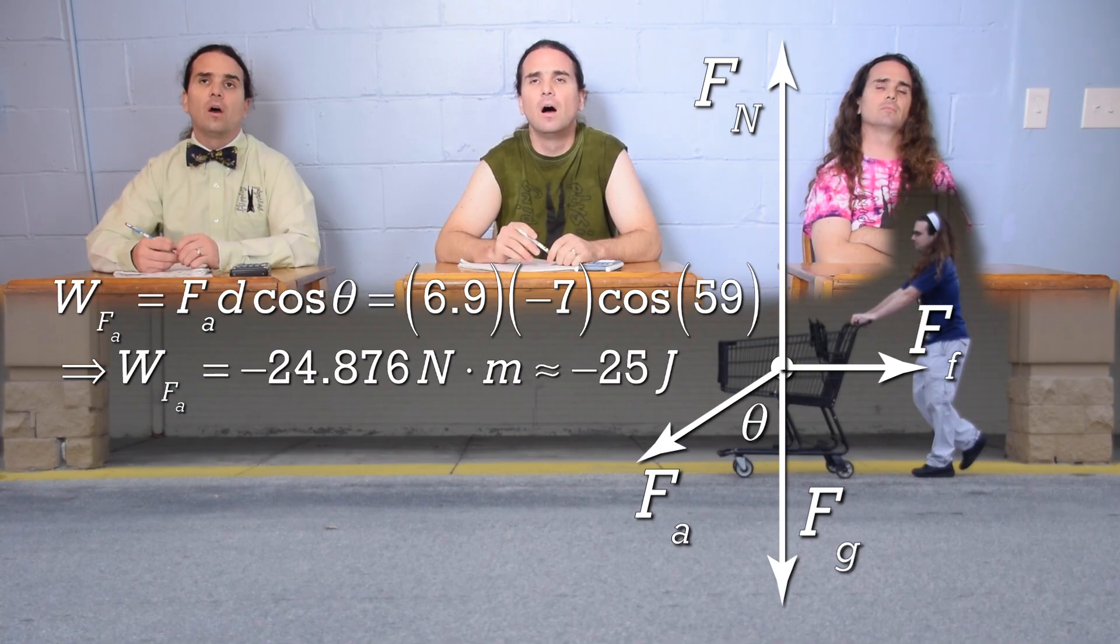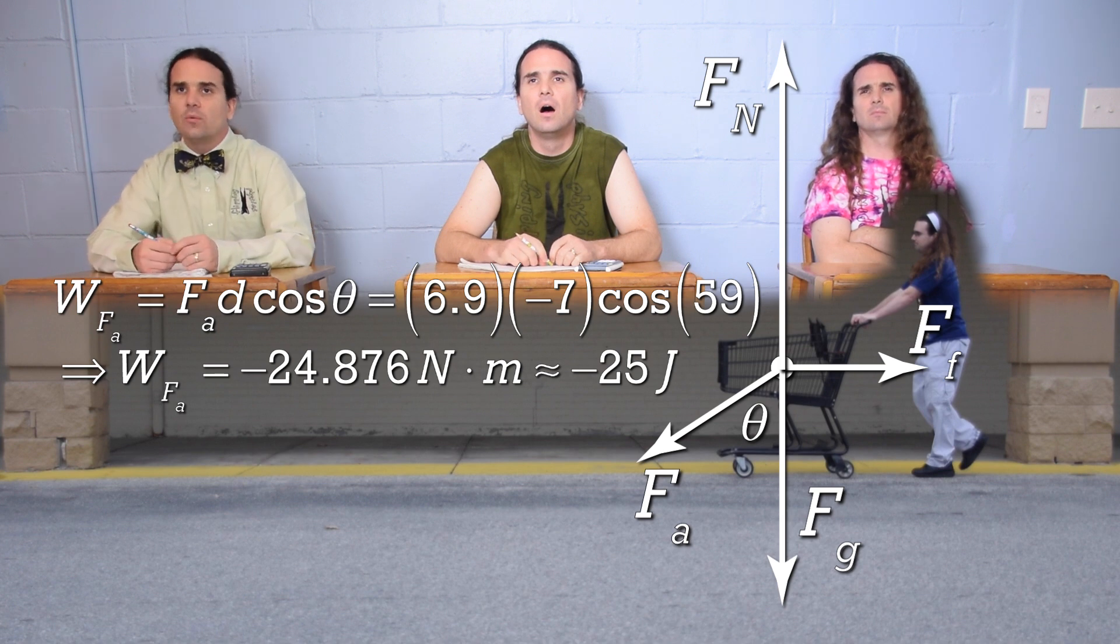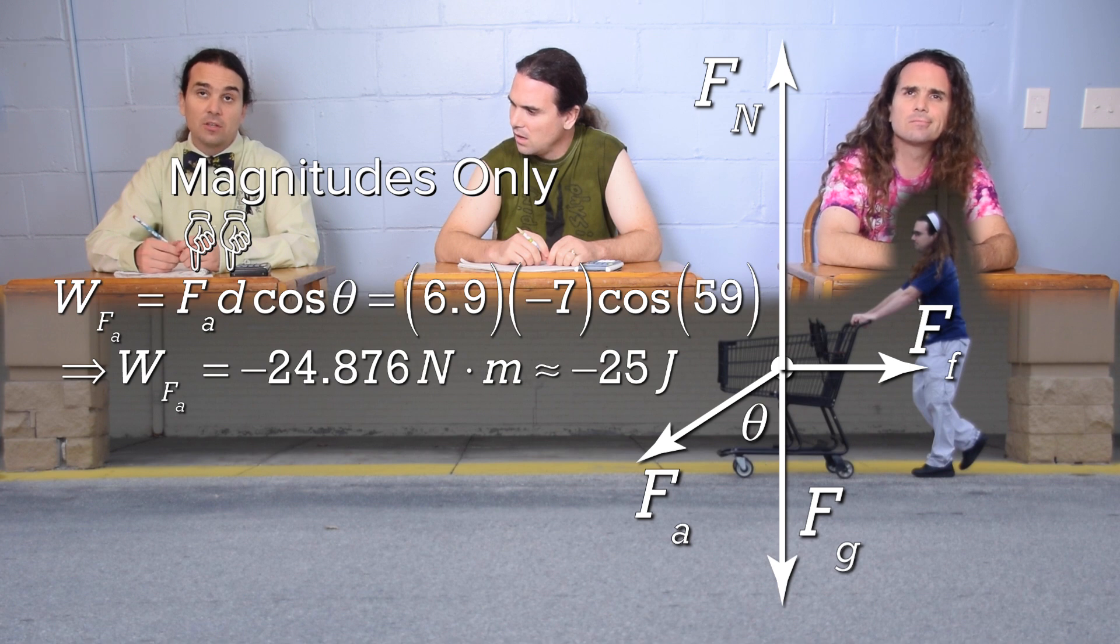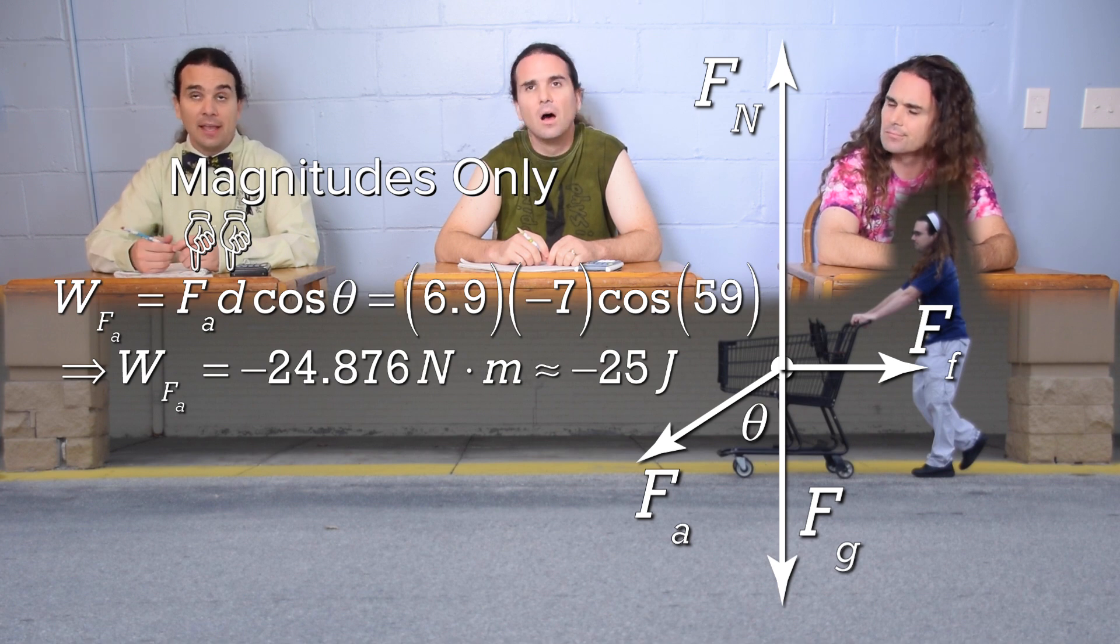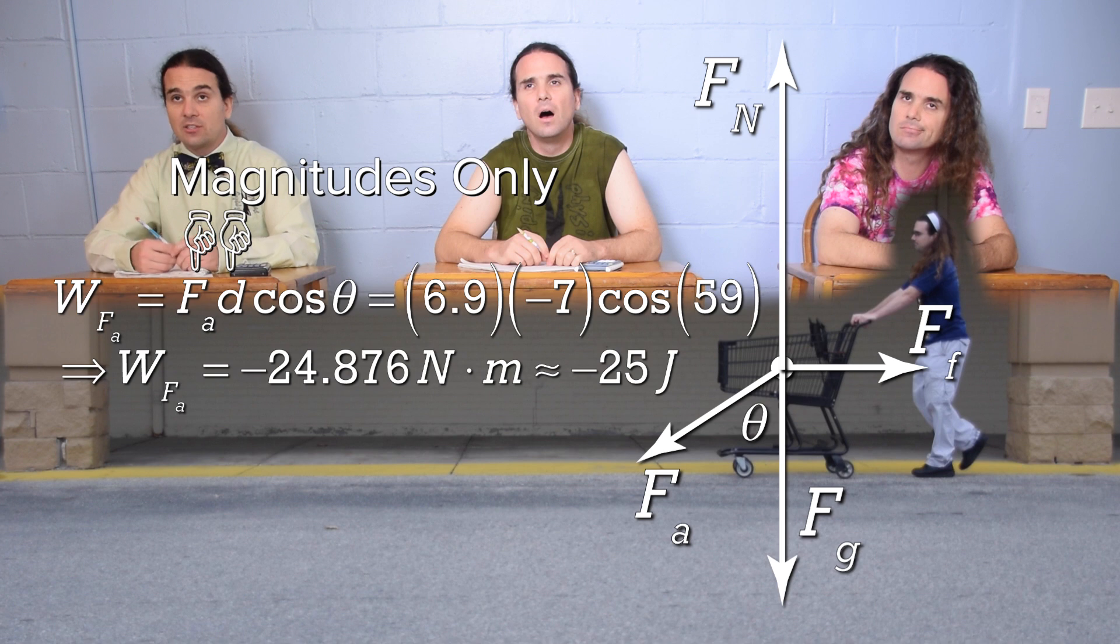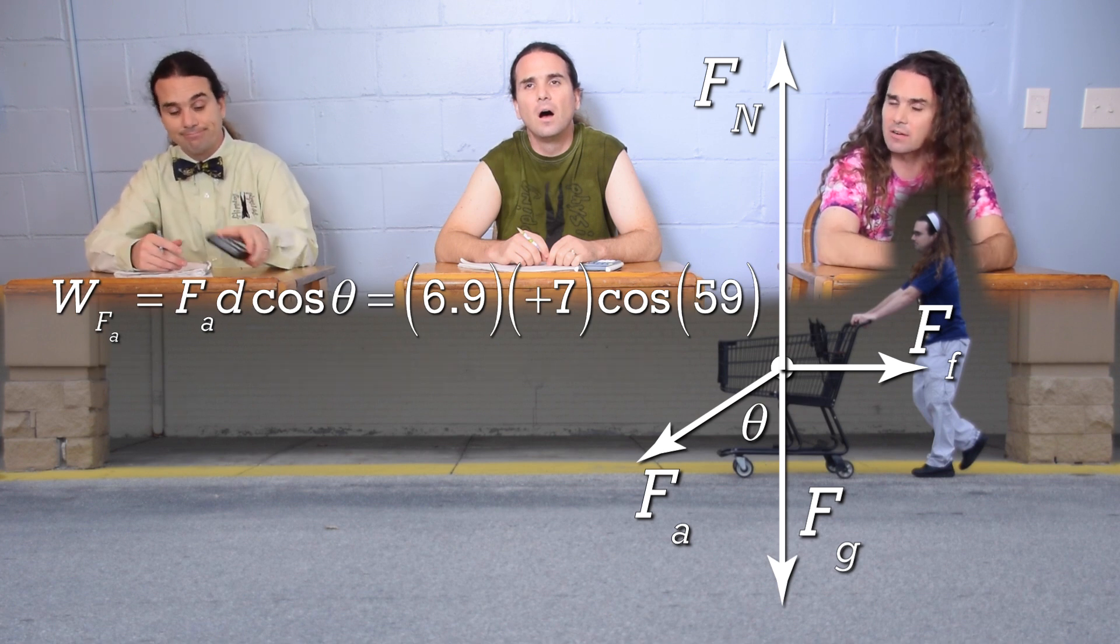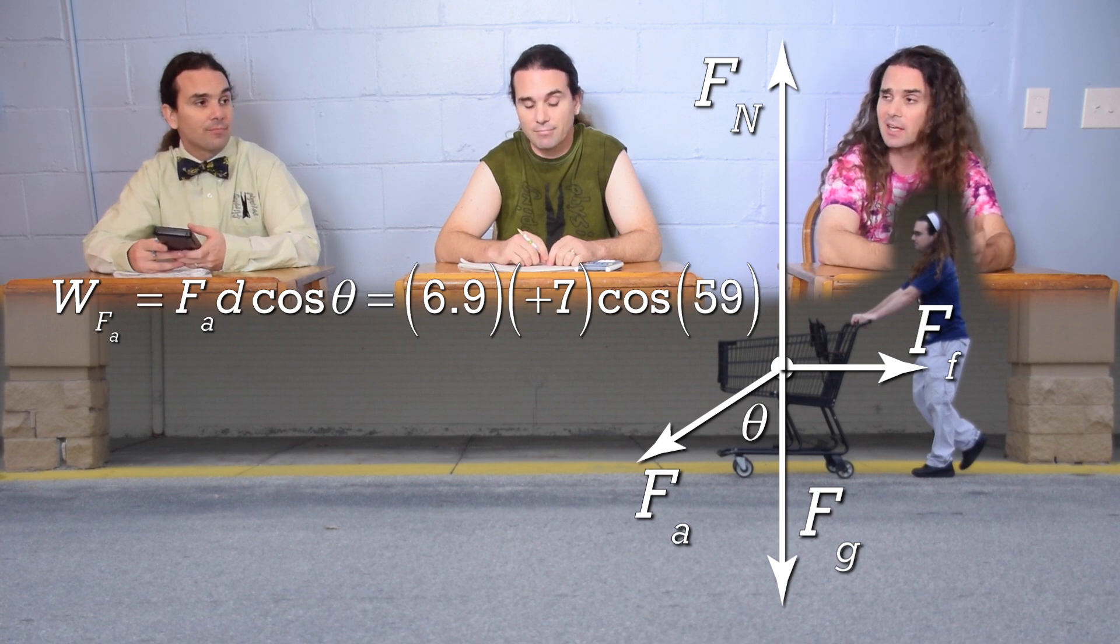Mr. P: Oh, wait a minute, we only use the magnitude of the force and the magnitude of the displacement in the work equation, so while the displacement is negative 7 meters, we actually need to use positive 7 meters in the equation. Mr. P: Right, it's the cosine of the angle that determines if the work is positive or negative.